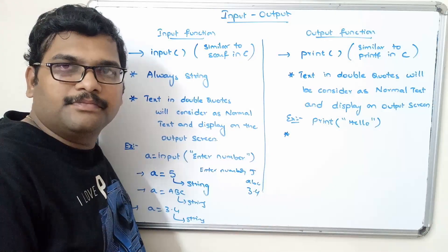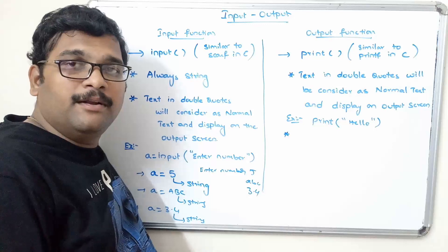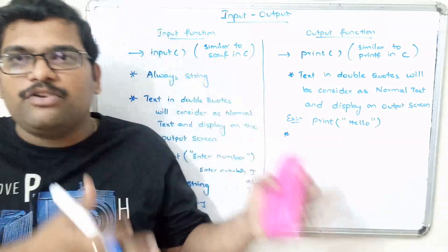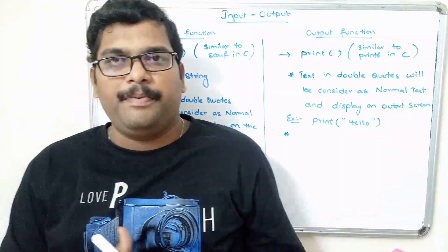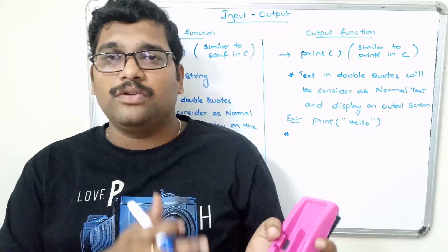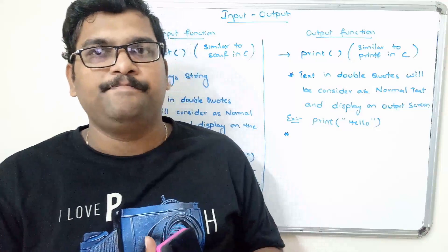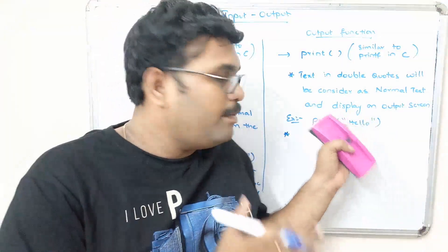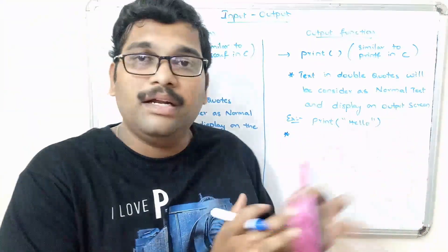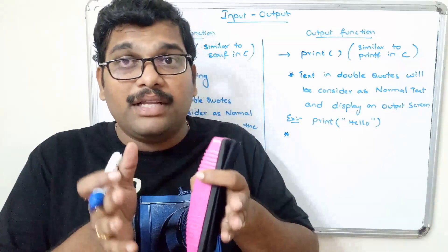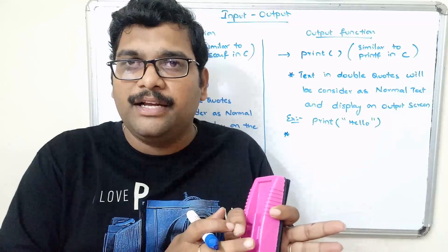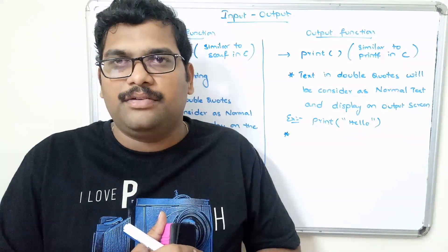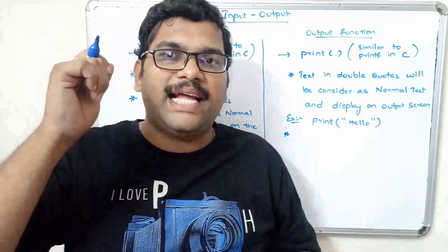If you want to print the value of a variable in C, you use format specifiers like %d for integer or %f for float inside printf. But in Python, if you want to print the value of a variable, you write the variable name outside the double quotes. Whatever text is written inside double quotes is treated as normal text, and whatever names are written outside the double quotes are treated as variables.